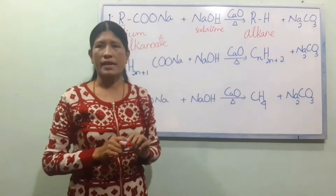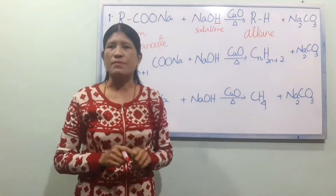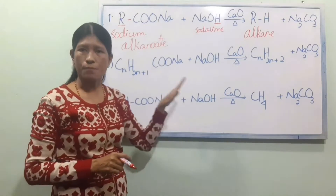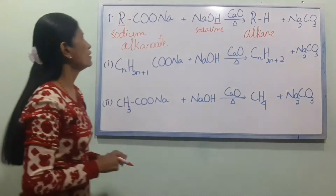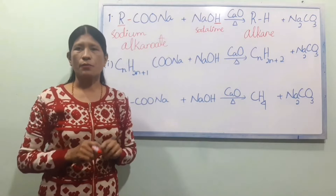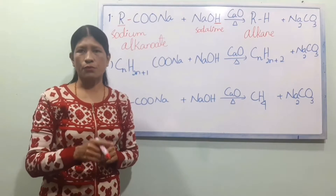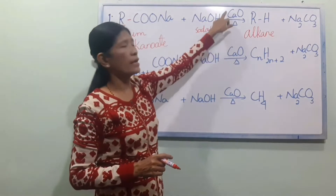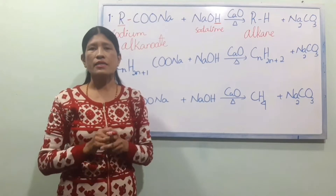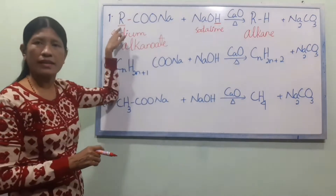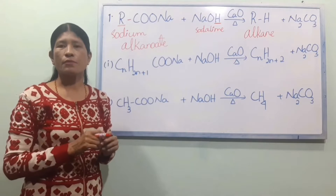If you have an organic reaction, you can observe that organic compounds react with inorganic compounds. So let's look at preparation method number one — the laboratory method: RCOO-Na + NaOH → RH + Na2CO3. This is the general reaction formula for the laboratory preparation of alkanes.